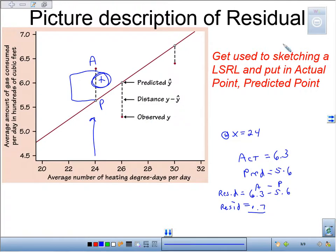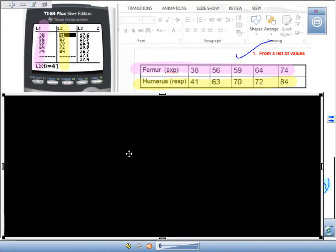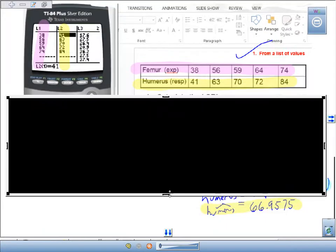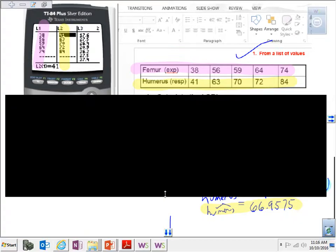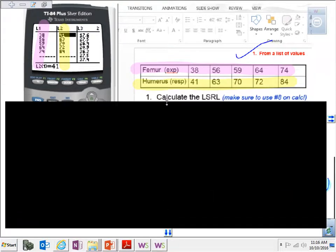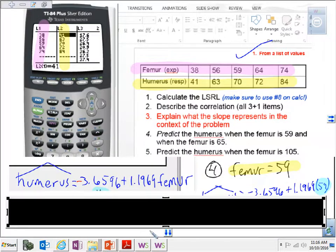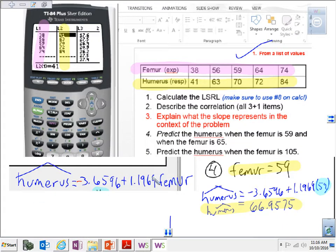Let me give you another one that we did last class. We looked at the femur length and humerus length of our extinct beast. We calculated the least squared regression line and got this down here. So this was our prediction right here.